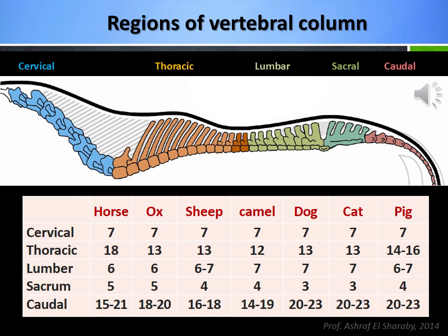The number of vertebrae is specific for each animal species and fairly constant in each region except the caudal region. For example, the vertebral formula of horse is: cervical 7, thoracic 18, lumbar 6, sacral 5, and caudal 15 to 22 vertebrae. Meanwhile, the formula in case of dog is: cervical 7, thoracic 13, lumbar 7, sacral 4, and caudal 20 to 23 vertebrae.